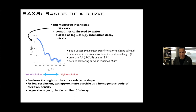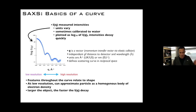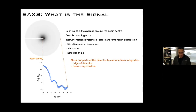You'll see q referred to as q or s in the literature. The units are typically in angstroms in the UK, US, and EU they tend to use nanometers, so you'll have to interconvert depending on the software. Scatter can do that. The reason we use the scattering vector is that it makes the x-axis independent of the distance to the detector and wavelength.